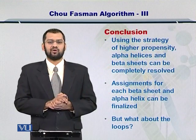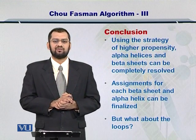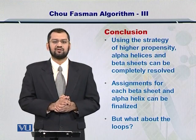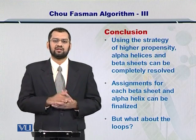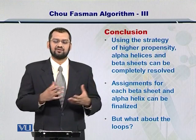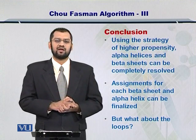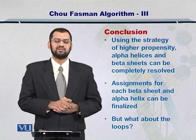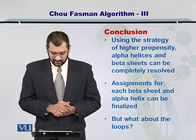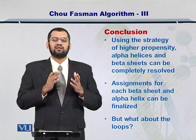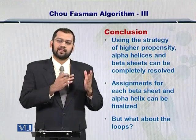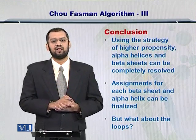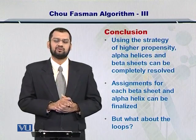These two points are very important towards finalizing beta sheets. Using the strategy of higher propensity for alpha helices and beta sheets and the average propensity towards finalizing them, you can classify major portions of your sequence into the secondary structures they can form. Next, what about loops and turns? Besides alpha helices and beta sheets, there are loops and turns as well, and you need to predict them properly too.